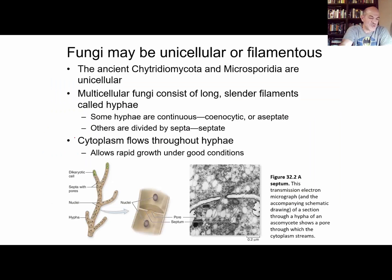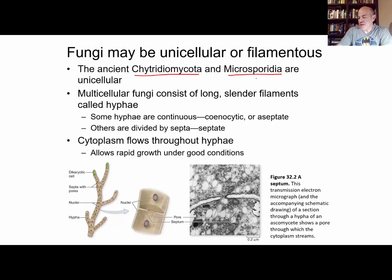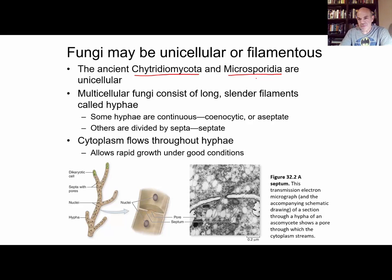Looking at the basics of fungal structure: some fungi are unicellular and appear to be more ancient, including the Chytridiomycota and the Microsporidia. Looking at ancestral characteristics, it's thought that the ancestors of fungi all had flagella, and the Chytridiomycota still show that today. Many other fungal groups seem to have lost their flagella — a sort of evolutionary reversal in the group.